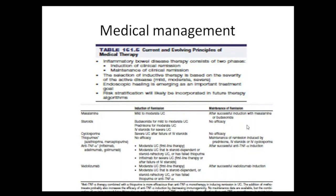When giving prednisolone, the initial dose is generally 30 to 40 mg. For two weeks the dose is maintained, then reduced by 5 mg every two weeks, making overall treatment around two to three months. The last two weeks, the patient should take 5 mg, then stop. Steroids should never be stopped abruptly at any given point in time.